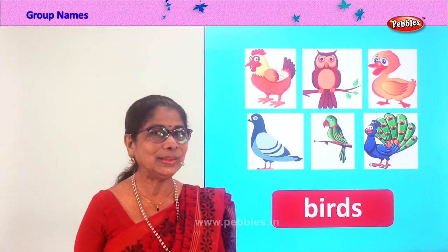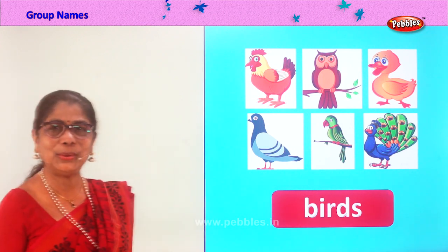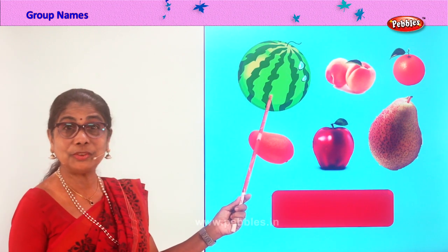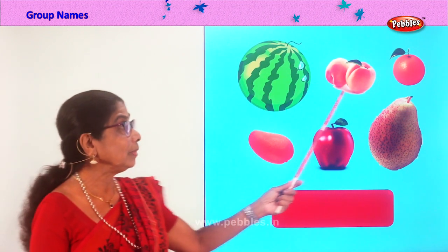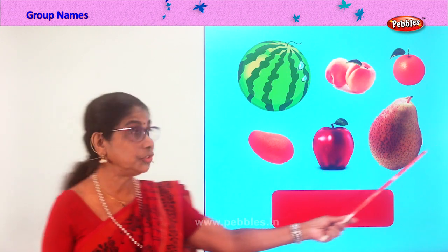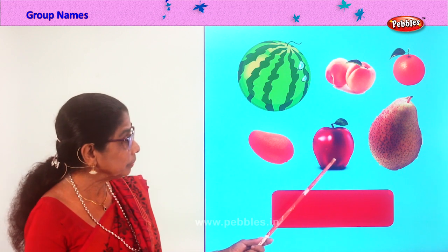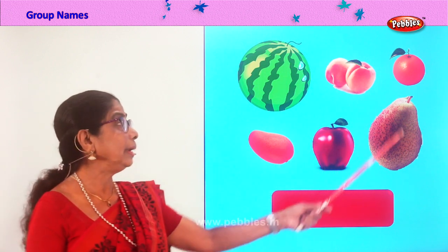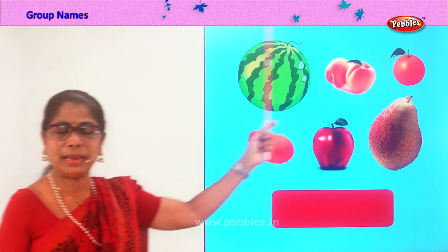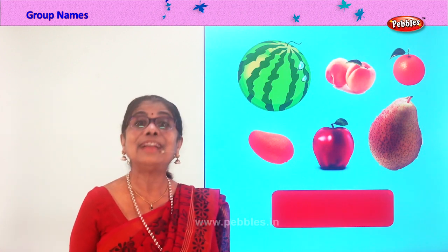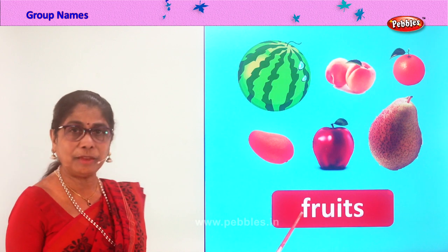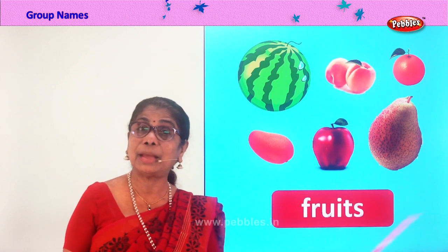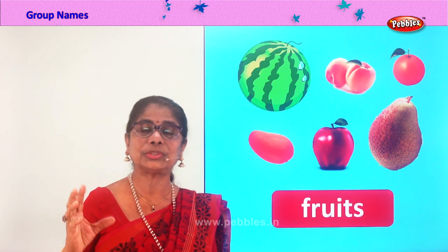Are you enjoying finding the group name? Good. Let's look at another group. What is this? Your favourite! Watermelon, peach, orange, apple, pear, mango — what is the group name for this? Fruits! Very good. Spell fruits: F-R-U-I-T-S. All these put together we call one thing: fruits.